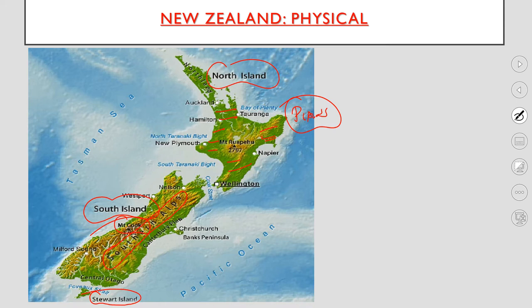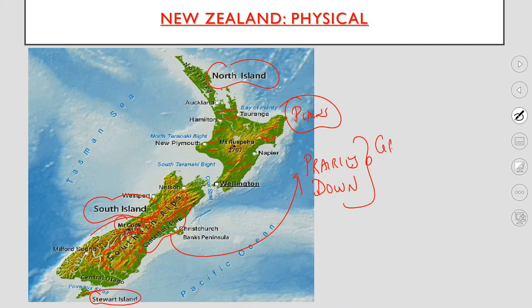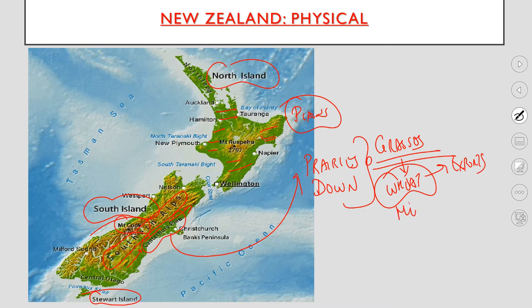A very small portion towards the east of the Southern Alps is plain area, and it has been named as Canterbury Plains. It is in fact very similar to the Prairies of North America and the Downs of Australia. Grasses are grown here, and specifically wheat, for which New Zealand is famous for wheat exports. Apart from this, Merino sheep is also reared in this belt. Merino sheep was originally brought from Spain, but at present, high quality wool is also exported by New Zealand. That was about the Canterbury Plains.